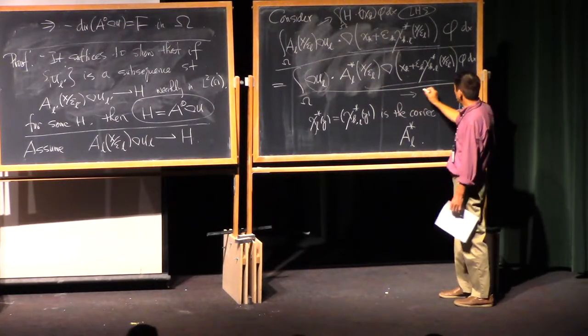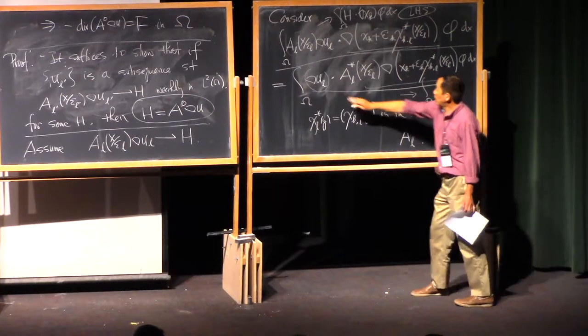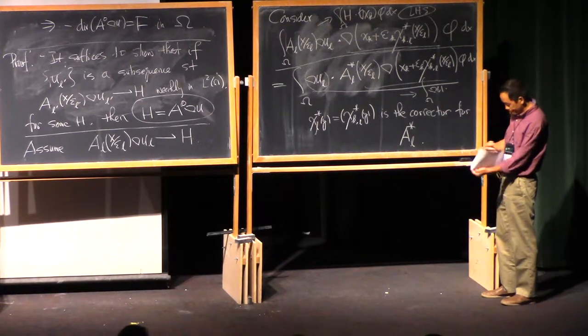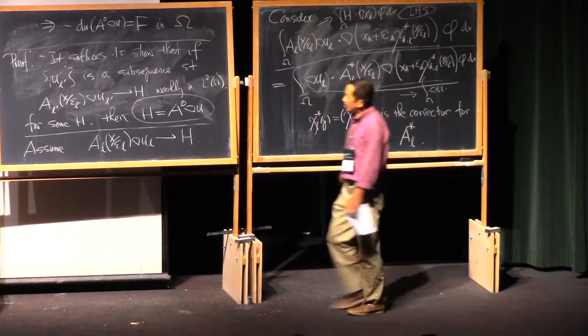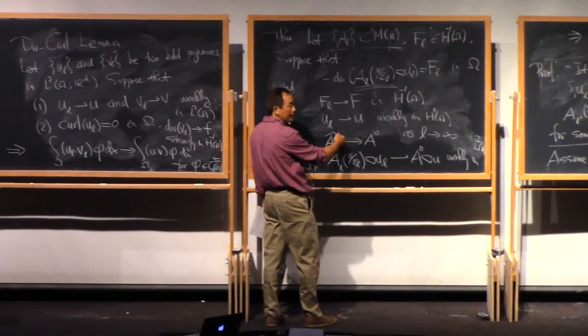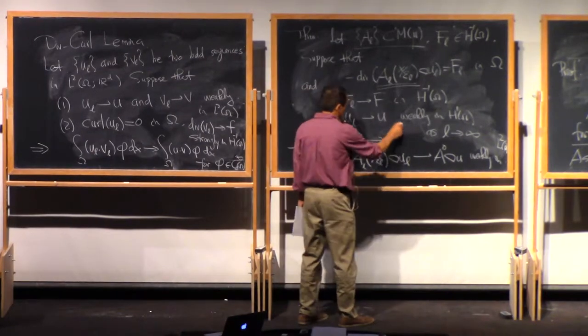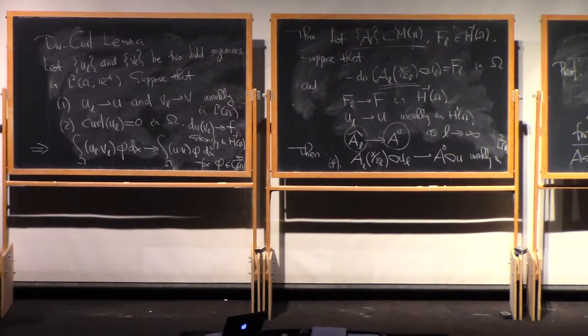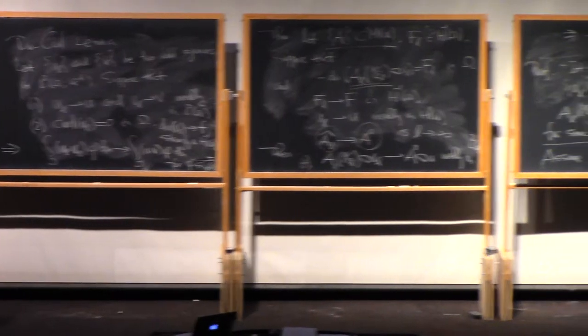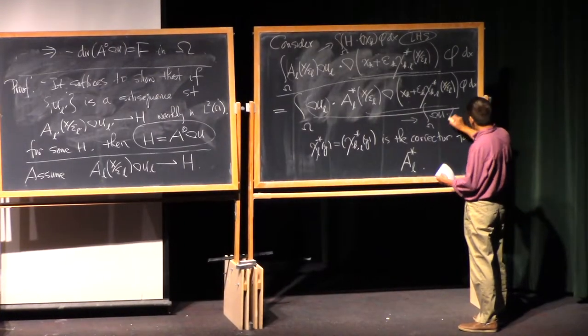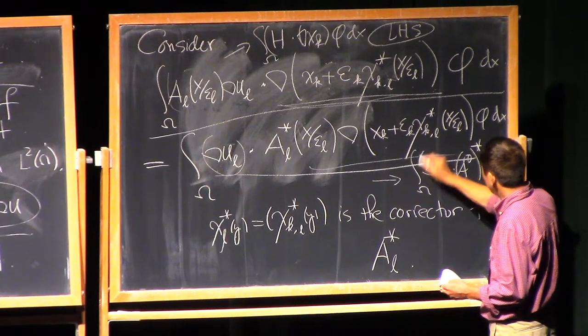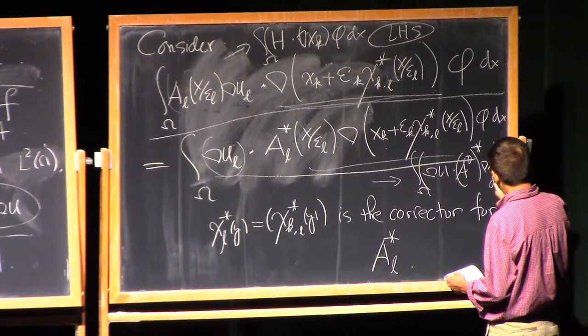So, the right-hand side also converge to, well, this one will converge to the gradient of u. And this will actually converge to something related to, well, the limit here using, it converge to the limit of this one, which actually is a zero. You have a star there. Okay? So, at the left-hand side, the right-hand side actually converge to A naught star and the gradient of xk and phi dx.